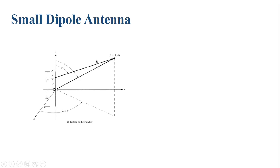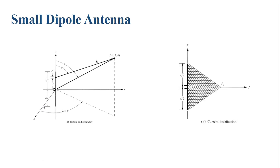The total length of the dipole antenna is l, and the current is not assumed to be zero. Since the dipole antenna length is small, there will be a triangular current distribution — zero at both ends and maximum current at the center.